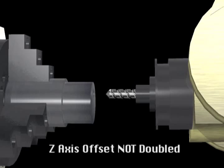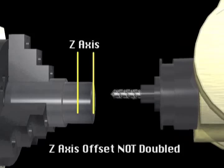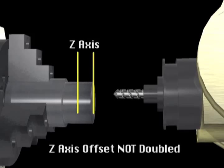Doubling the offset amount only applies to X and not the Z-axis. Offsets in the Z-axis at the main and subspindle are directly applied since the amount entered is exactly how far the tool moves in Z.